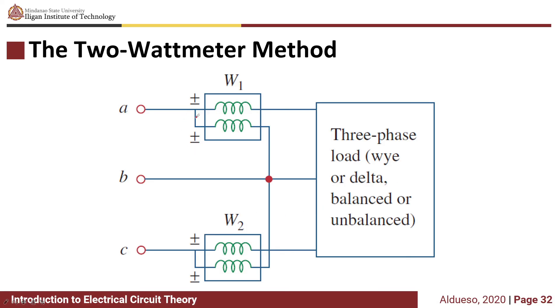It's much better to connect the 2 wattmeters between 2 lines: wattmeter 1 between line A and line B, and wattmeter 2 between line C and line B.